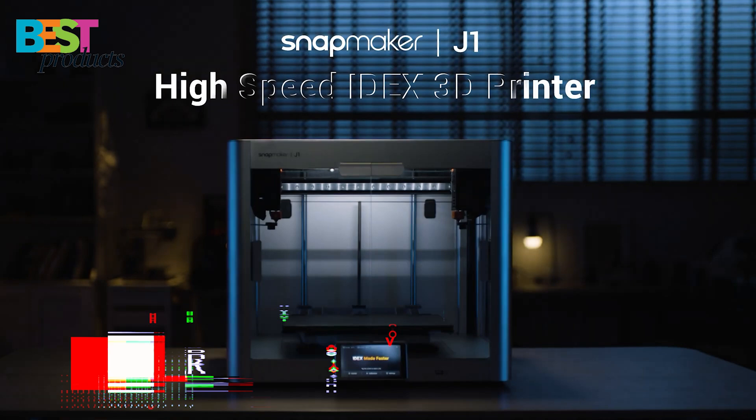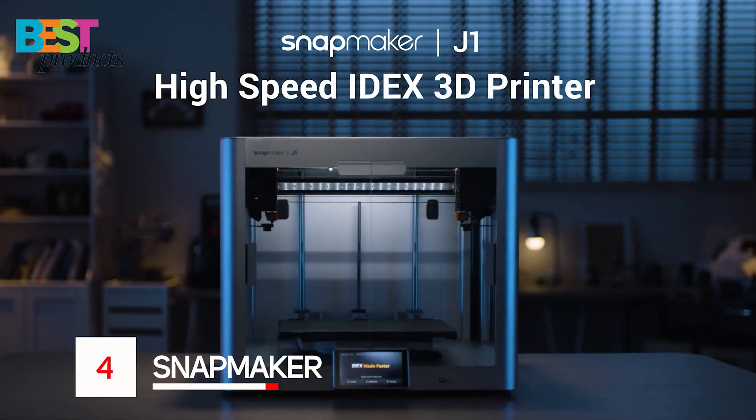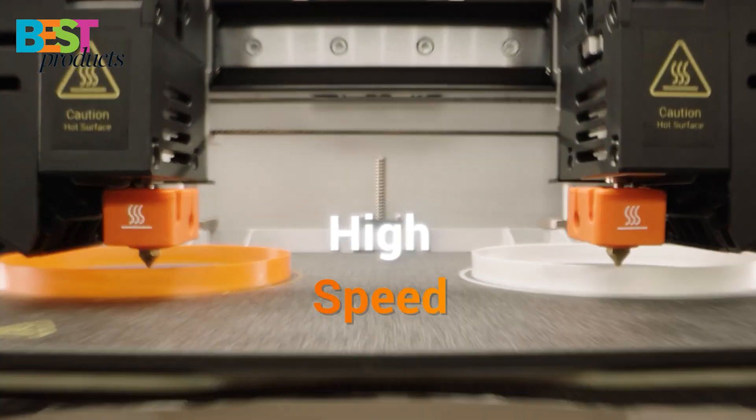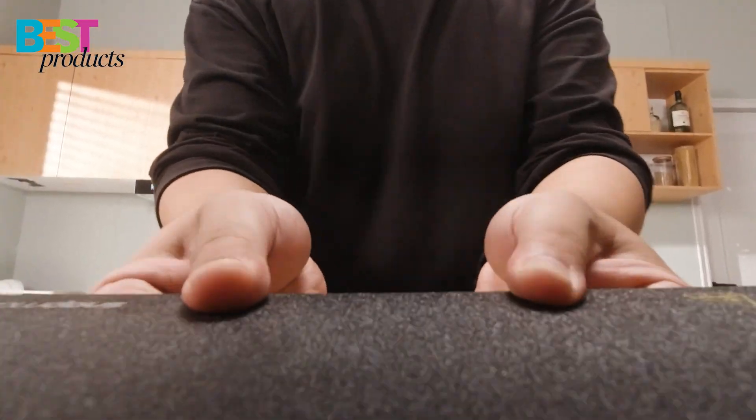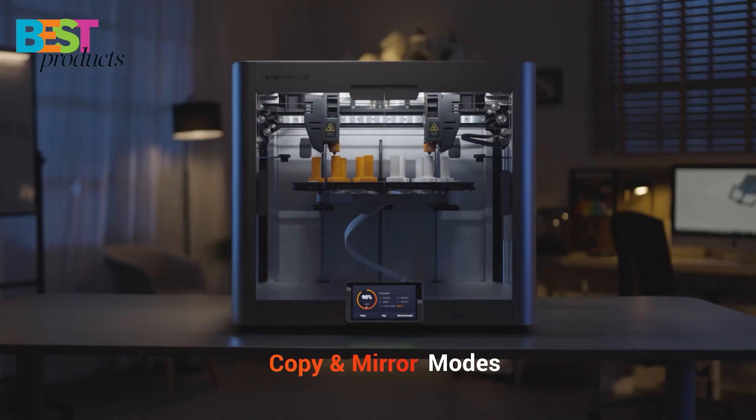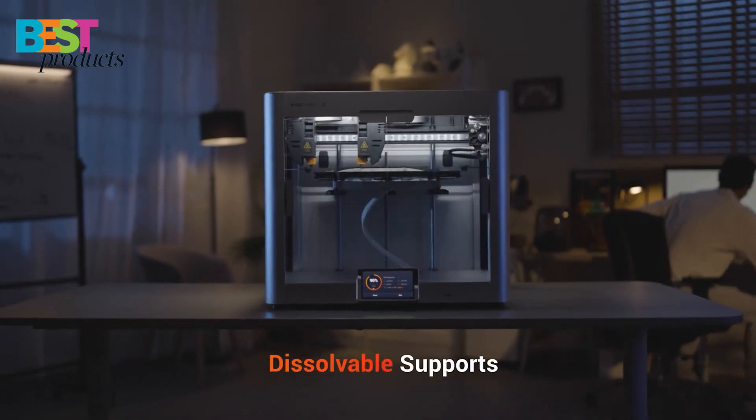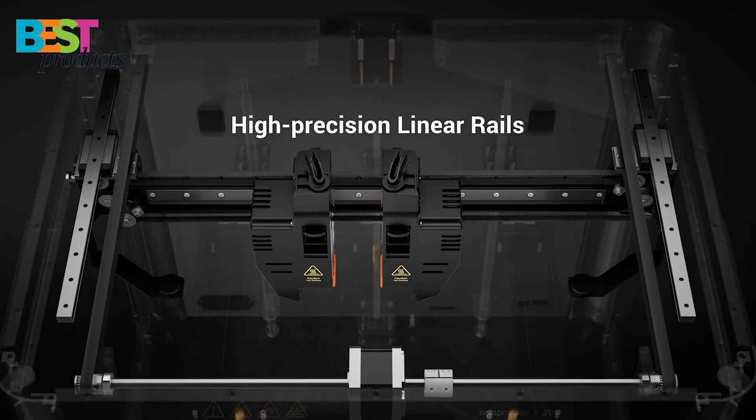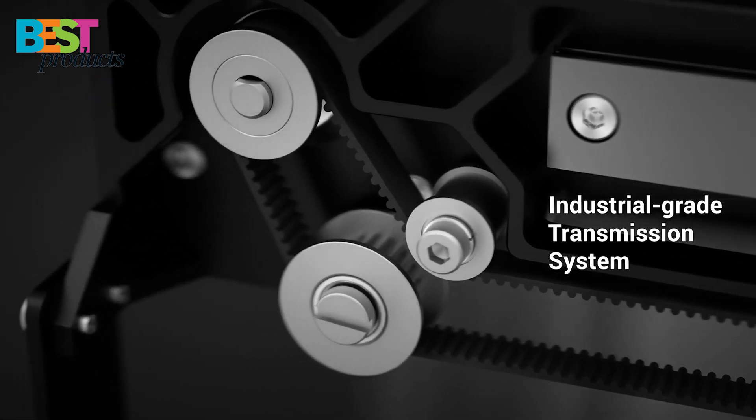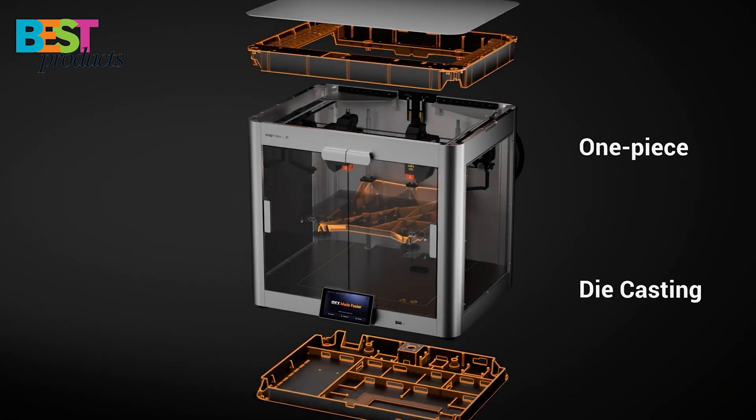Number 4: Snapmaker. The Snapmaker J1 is a high-speed 3D printer that features independent dual extruders, ultra-fast print speed, and smoothing optimization. With cast and machine parts, linear rails, intuitive software, and user-centered designs, the J1 is refined and solid.